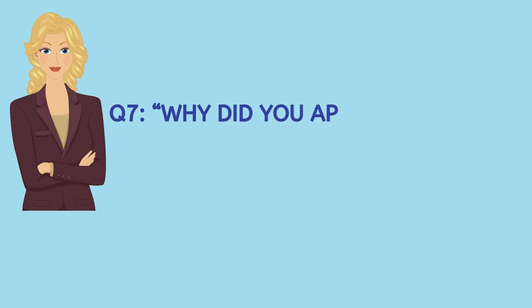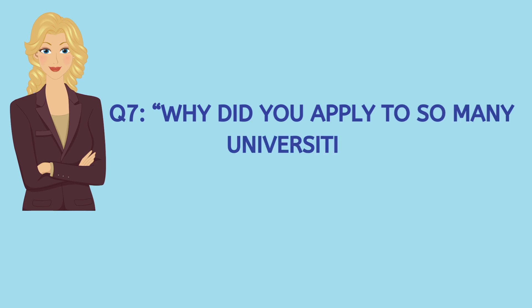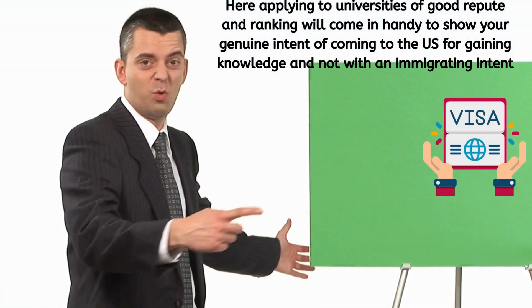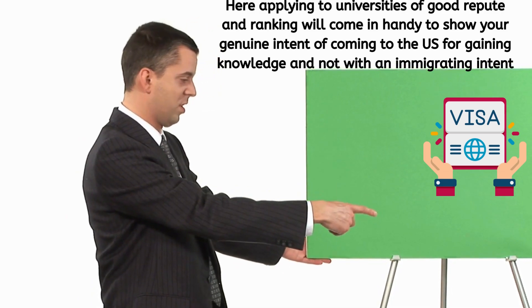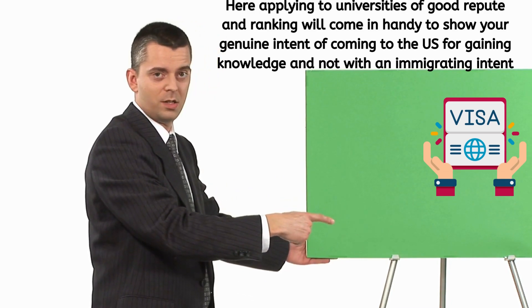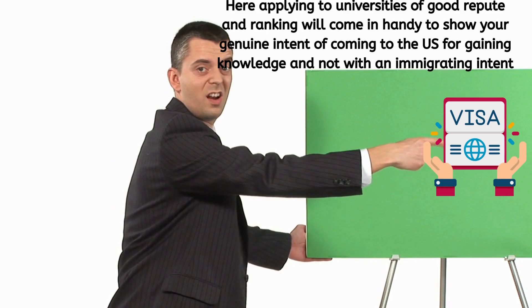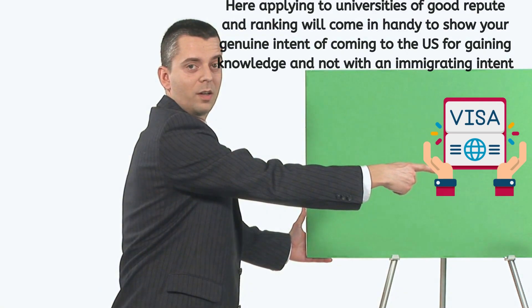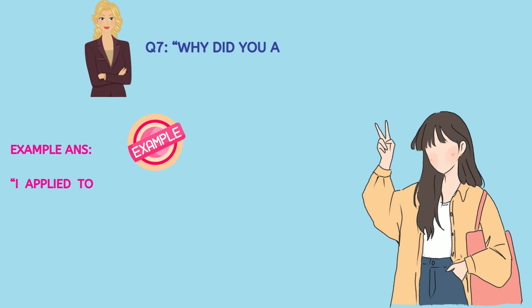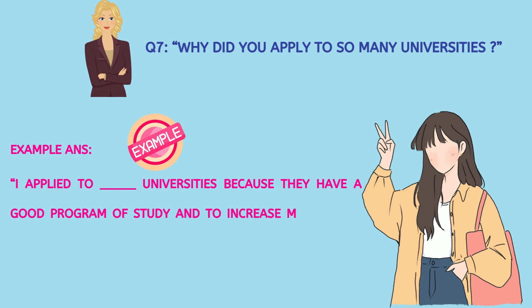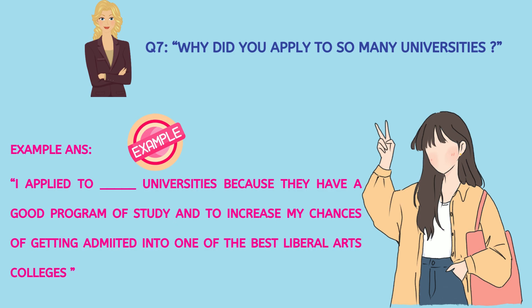Next question: they could ask you why did you apply to so many universities? The reason to ask this is to understand whether you applied to these universities to enter the U.S. in any possible way, or if you have a genuine reason. Applying to universities of good repute and ranking will come in handy to show your genuine interest in gaining knowledge rather than immigrating. Here you can mention the number and names of universities you applied to and explain the grounds based on which you applied — for example, if they all have a good liberal arts department, that is the reason.